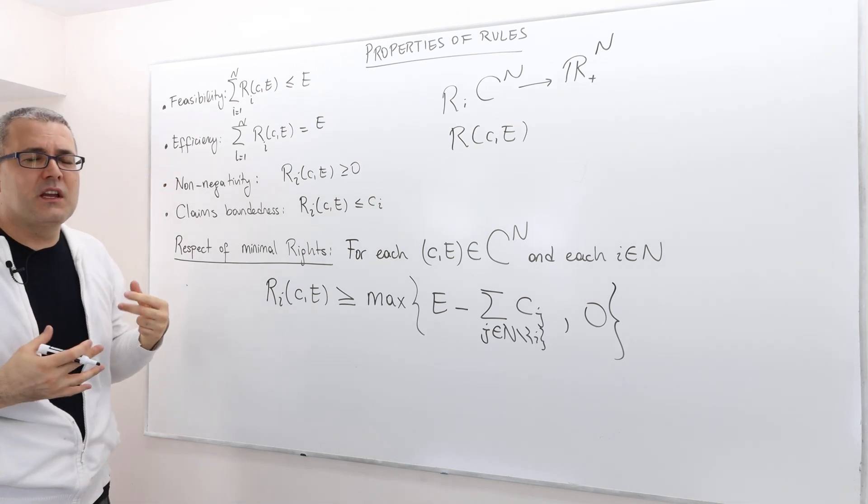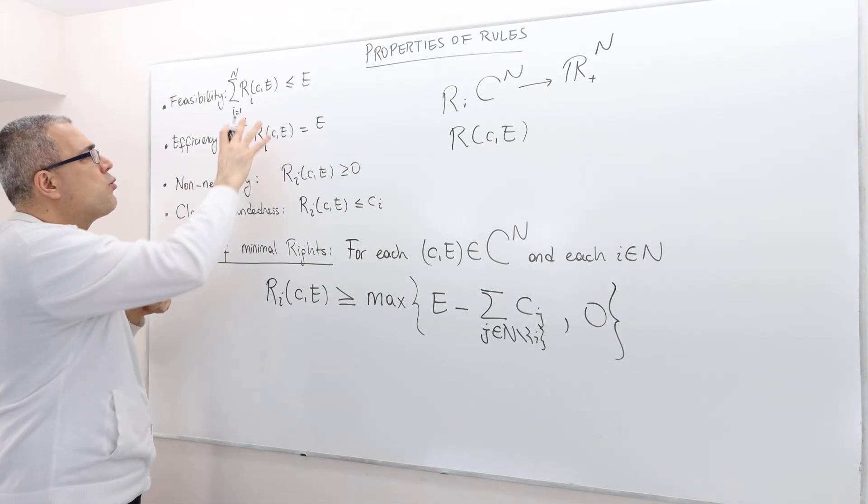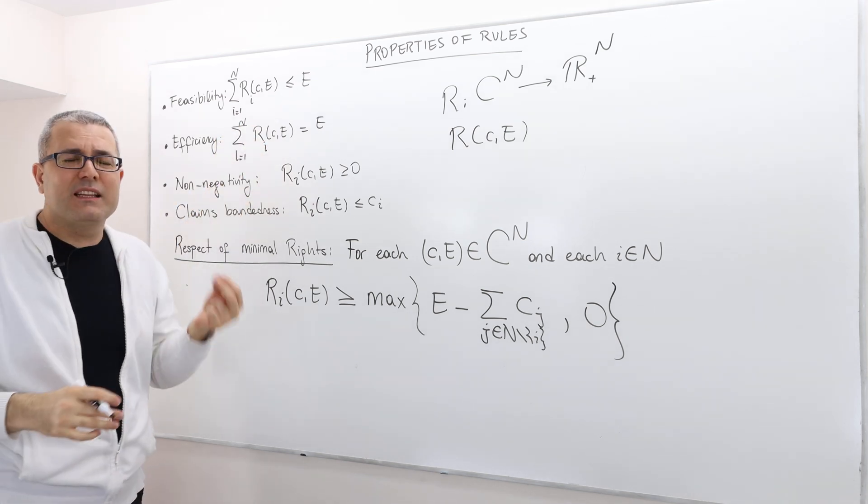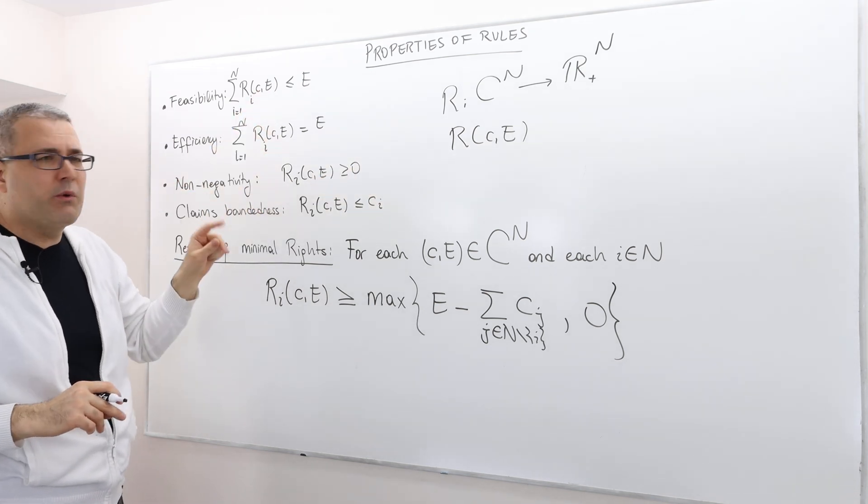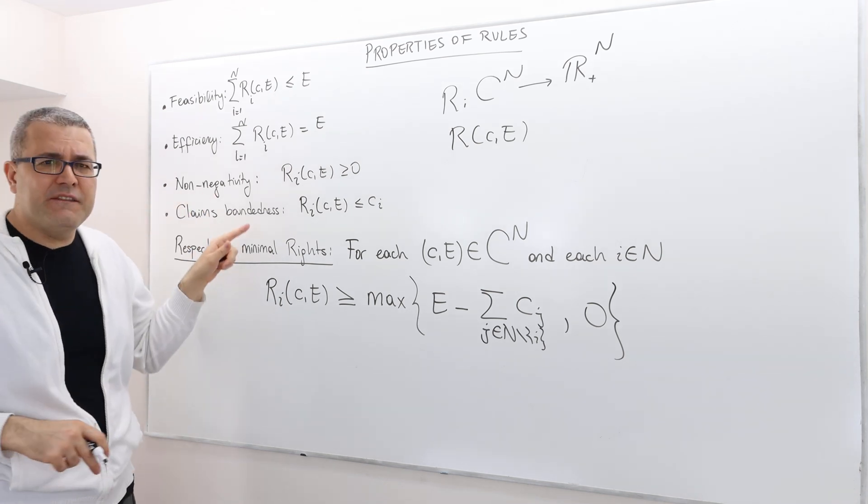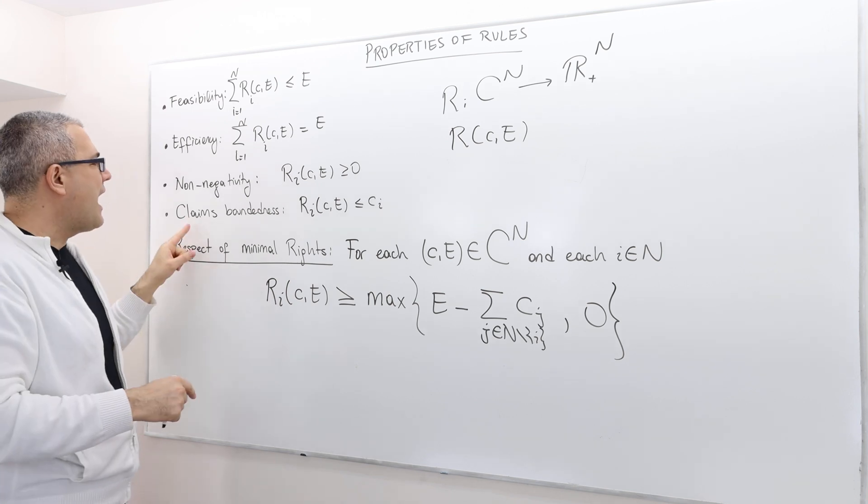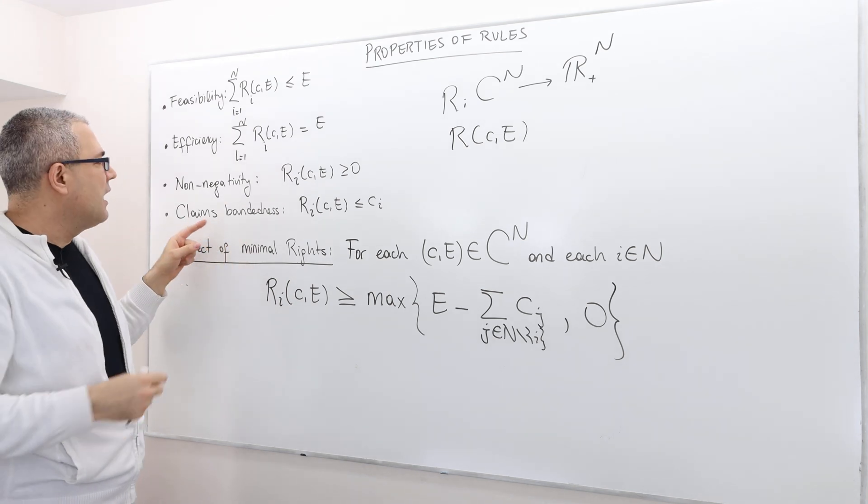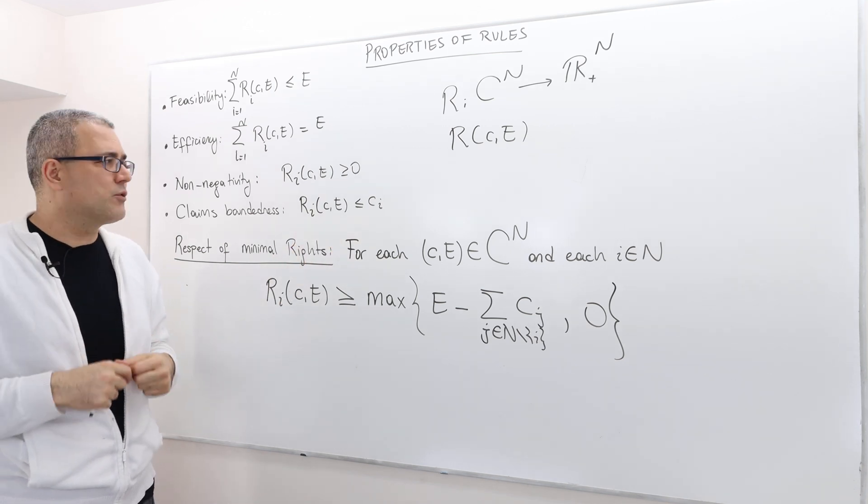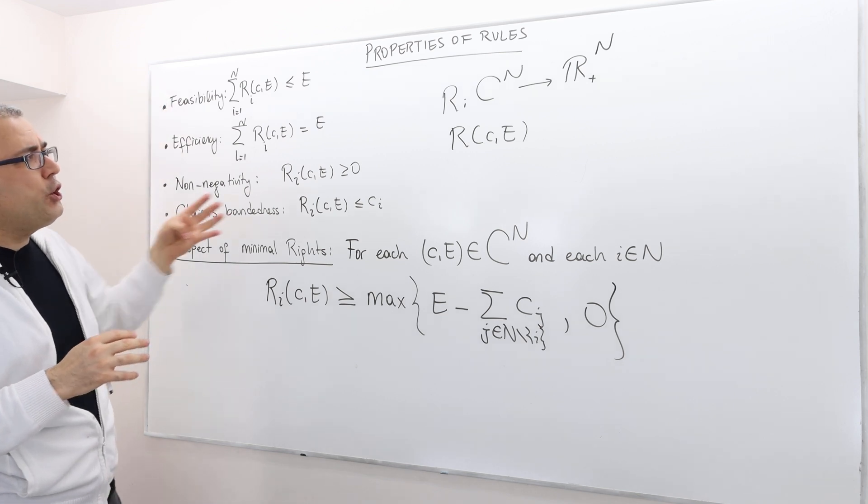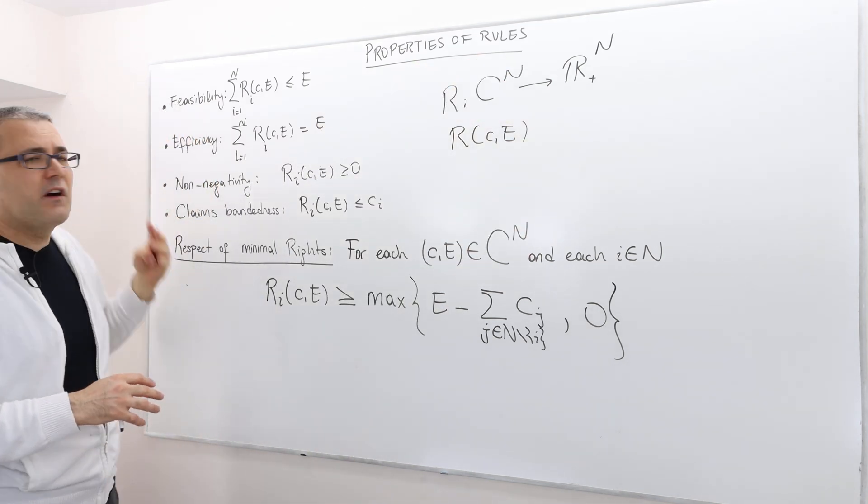Efficiency is, well, you shouldn't leave any surplus on the table. Basically, the total award must be exactly equal to the total surplus available. So we want every R to satisfy these two assumptions. On top of that, non-negativity - remember, every individual should be getting non-negative award. And claim boundedness basically means no agent should get more than what he or she claims. So again, we assume that a rule, a division rule, is a function mapping C^N to R^N_+, satisfying those four properties.